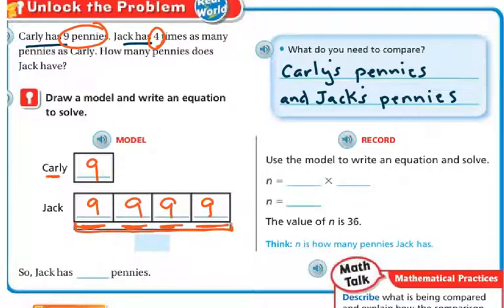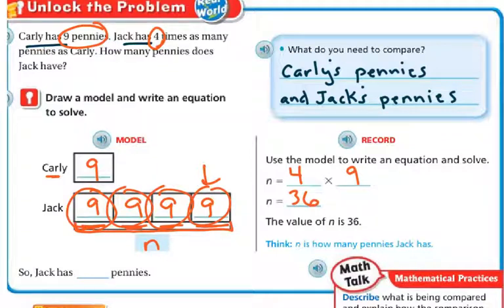And then when we add these together, we're going to get N because we don't know what N is. So now we're going to use the model to write an equation to solve. So N equals 4 times 9, because we've got 1, 2, 3, 4, and each of them is 9. And 4 times 9 is 36. So the value of N is 36. Therefore, Jack has 36 pennies.